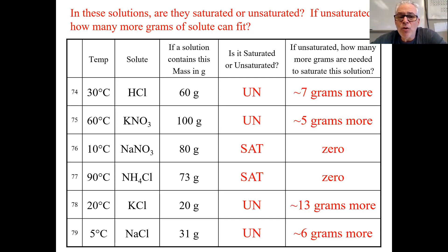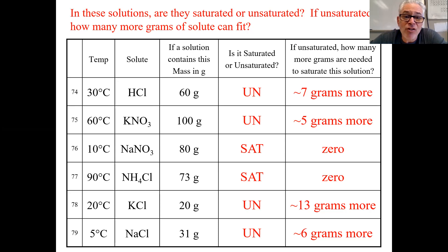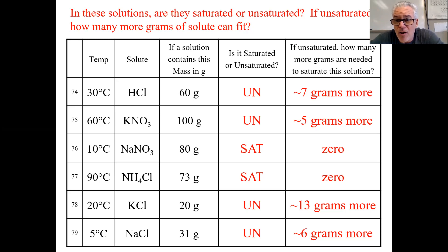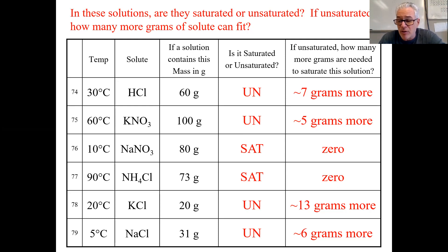The only two that are saturated are 76 and 77, so no more will fit in. All the others are unsaturated. Find the temperature, slide up to the proper compound, and figure out how much fits in. For the HCl, 60 grams are in 100 mL of water but it can hold about 67 — so about 7 more grams fit. With KNO3, you're unsaturated — about 5 more grams fits. With KCl and NaCl, also under the curve. If you're under the curve, there's that much more room. If you're on or over the curve, you're saturated — any extra would just be at the bottom of the beaker.